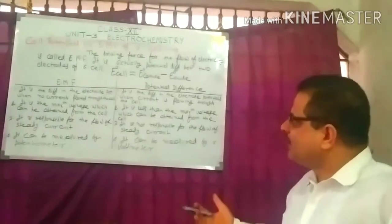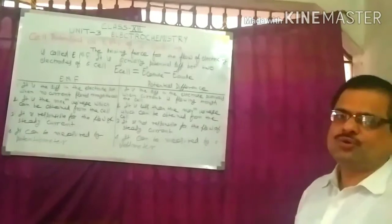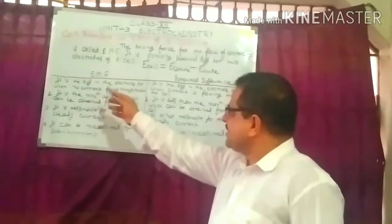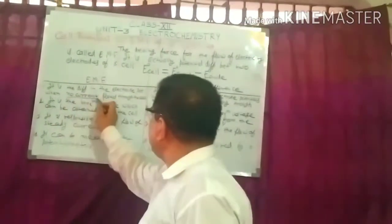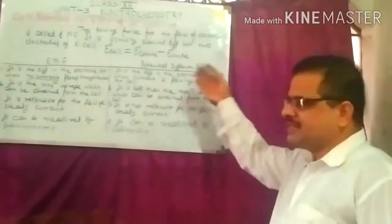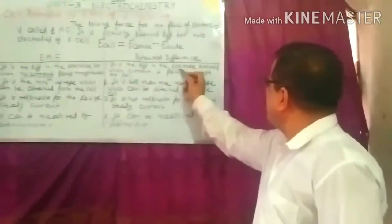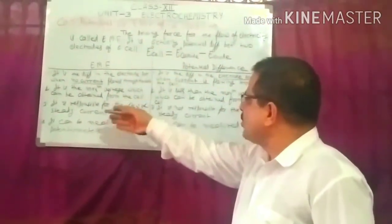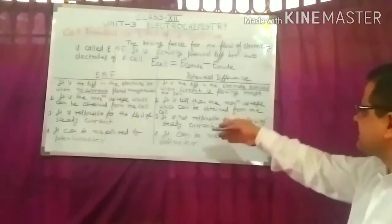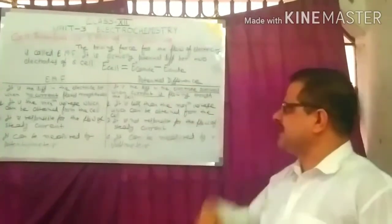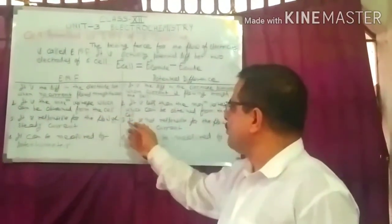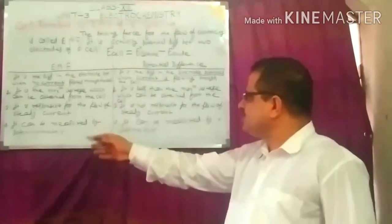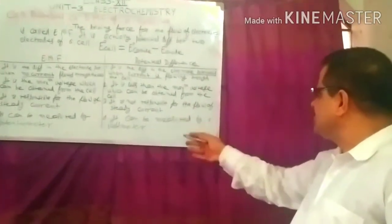What is the difference between EMF and potential difference? EMF is the difference in electrode potentials when no current flows through the cell; potential difference is the difference in electrode potentials when current is flowing through the cell. EMF is the maximum voltage obtainable from the cell, while potential difference is less than that maximum. EMF is responsible for the flow of current, whereas potential difference is not. EMF is measured by a potentiometer; potential difference is measured by a voltmeter.